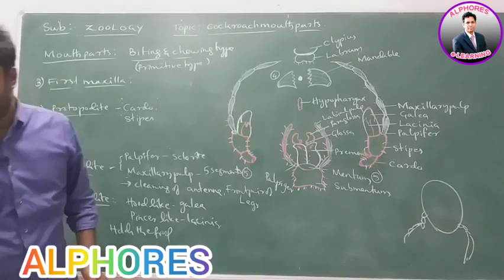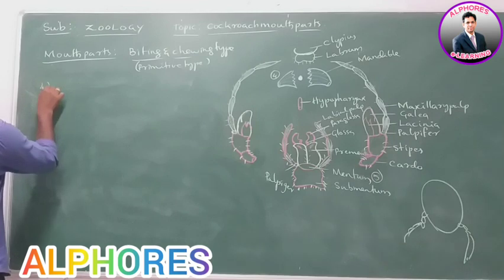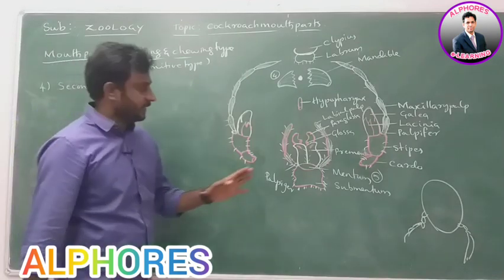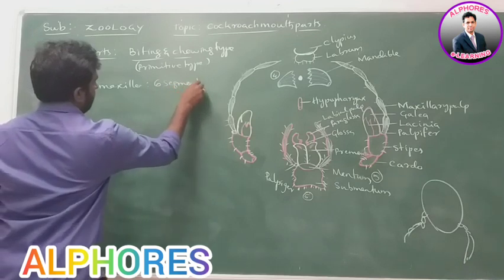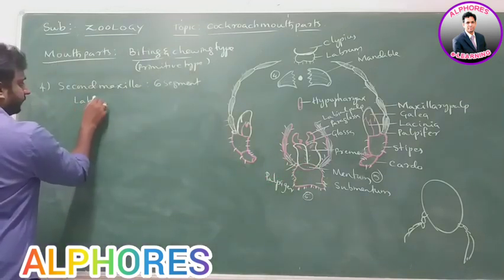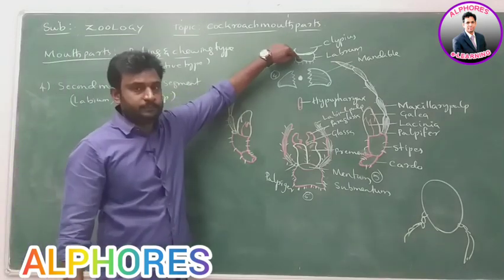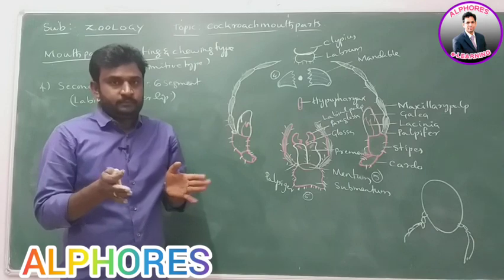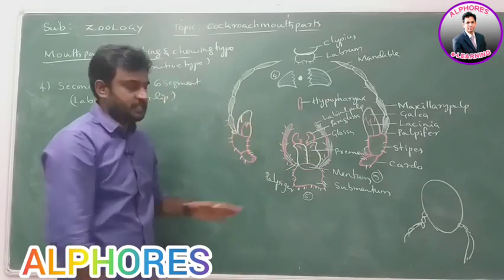The next part in the mouth parts is the second maxillae. One pair of second maxillae are present in the sixth segment of the head. Both second maxillae are fused to form one structure which is called labium, also called the lower lip. So labrum is the upper lip and labium is the lower lip. Labium is formed by the fusion of two second maxillae.